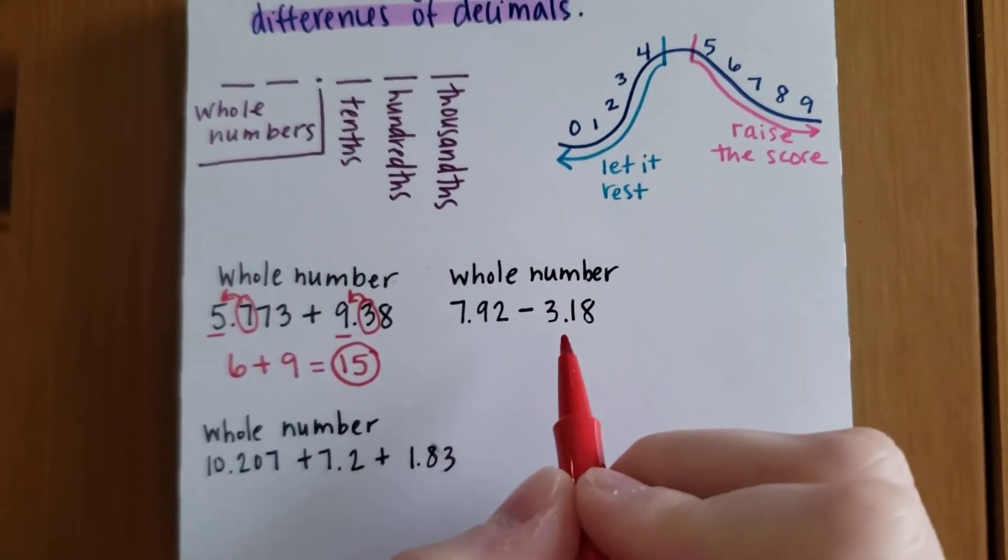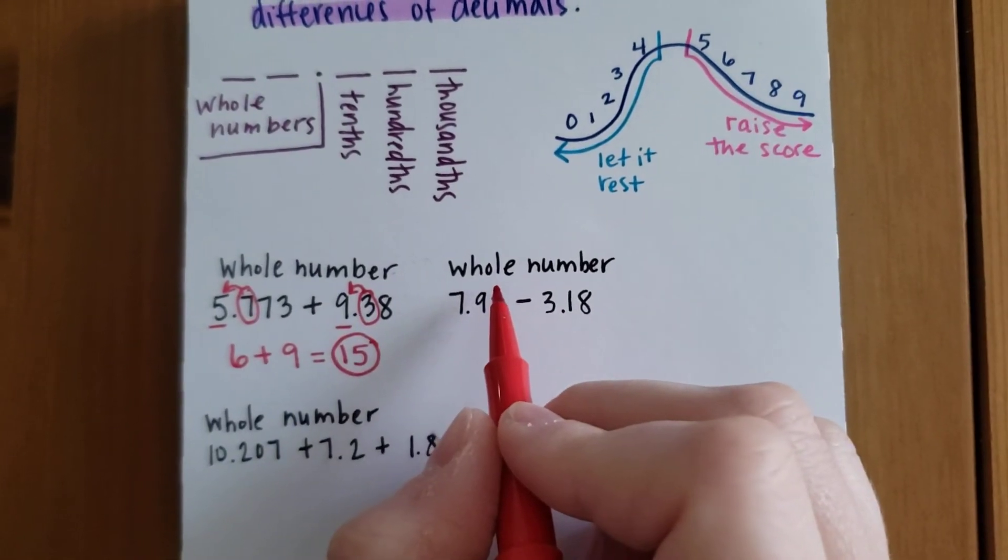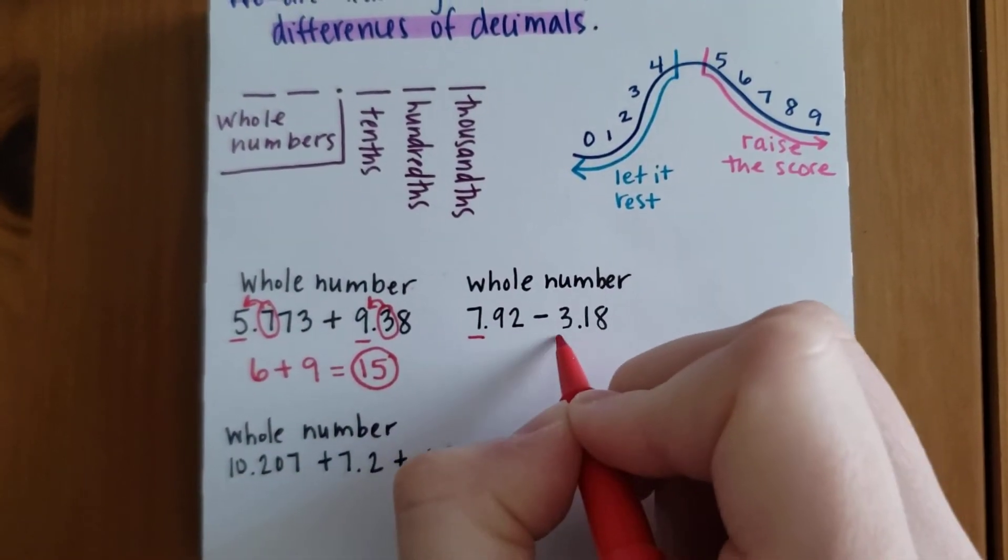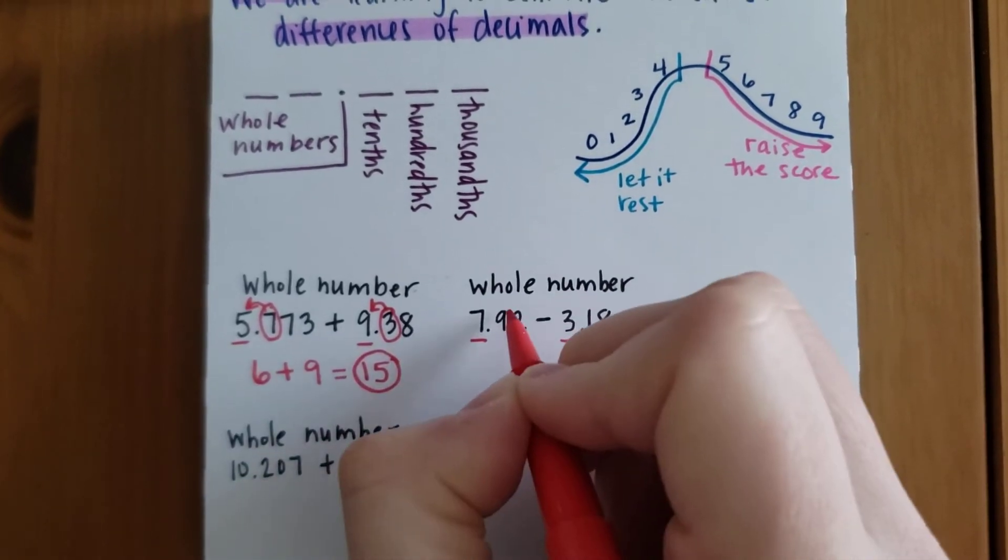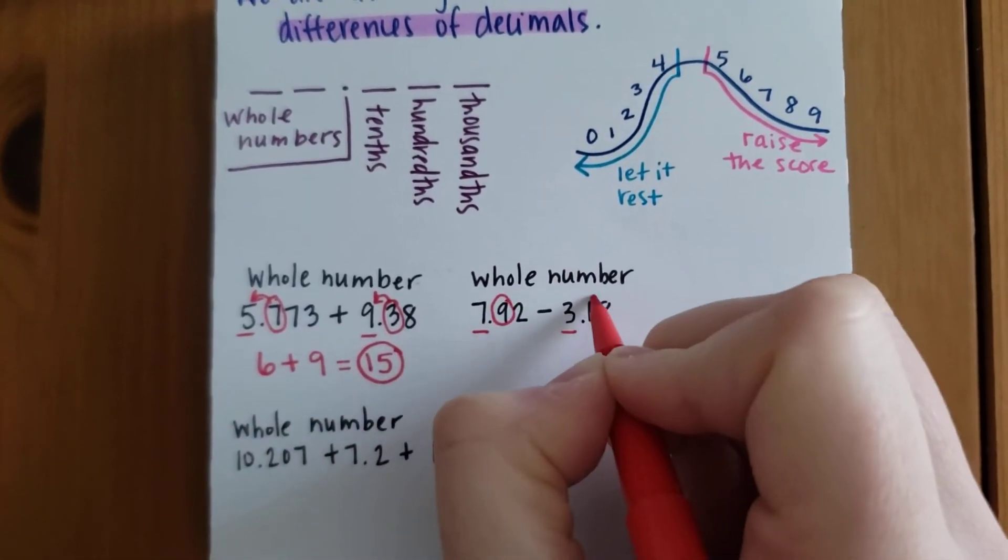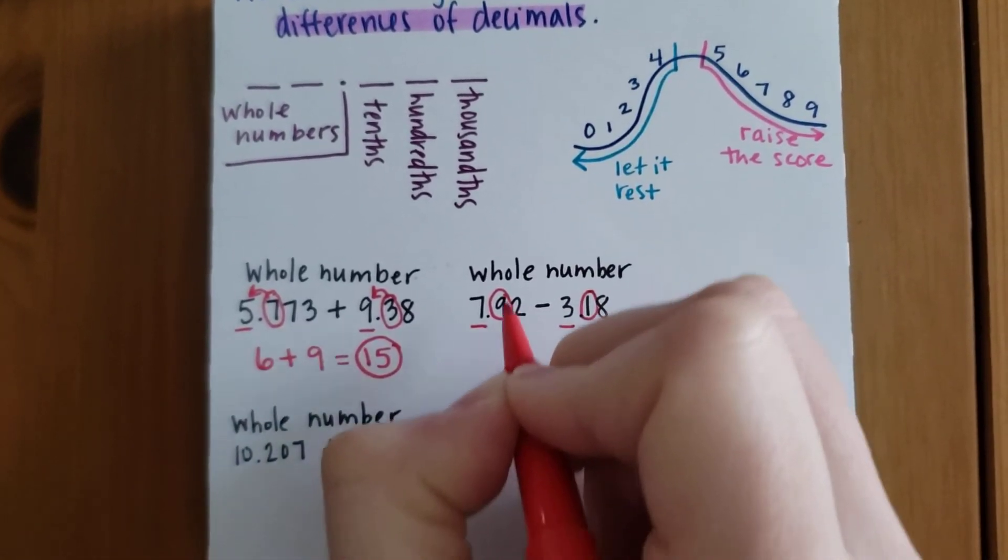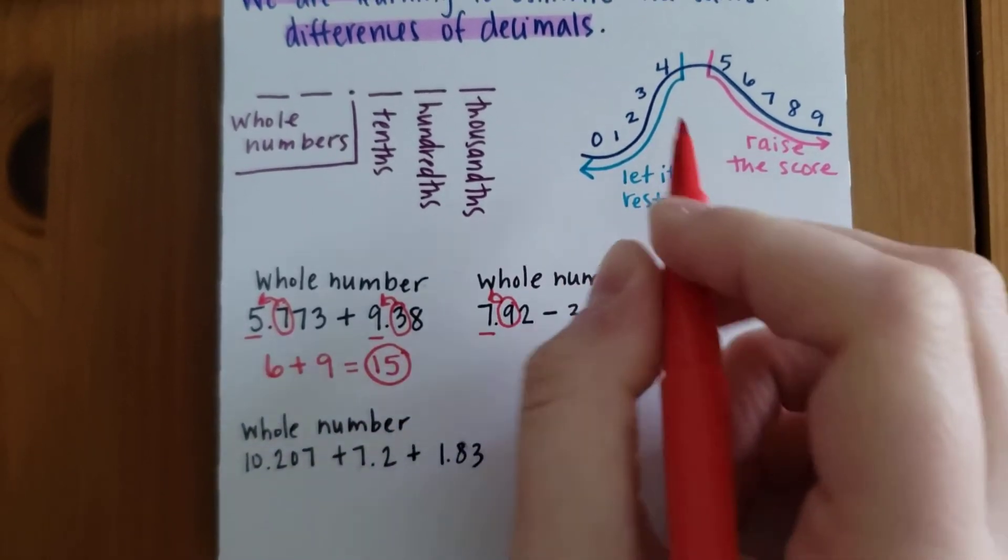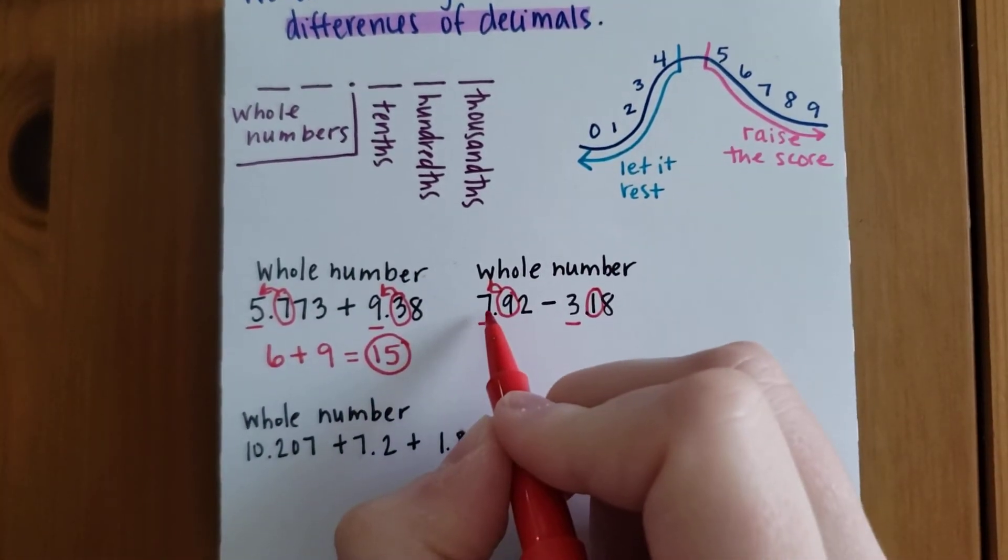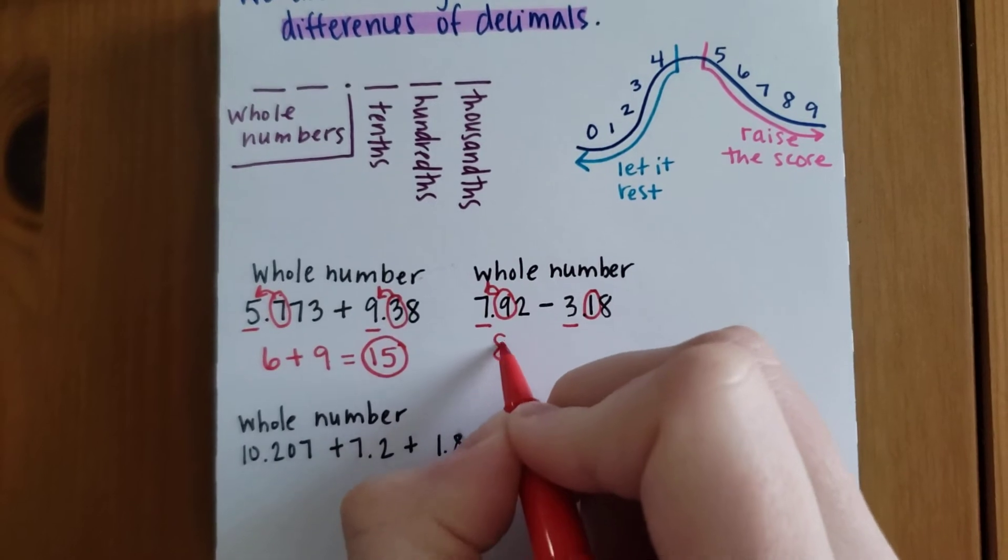For subtraction, it's the same thing. We're again rounding to the nearest whole number, so our 7 and our 3 are our two whole numbers. We're going to look at the numbers next to them to decide what to do. The 9 is bigger than 5, so it's going to tell our 7 to go up, turning it into an 8.